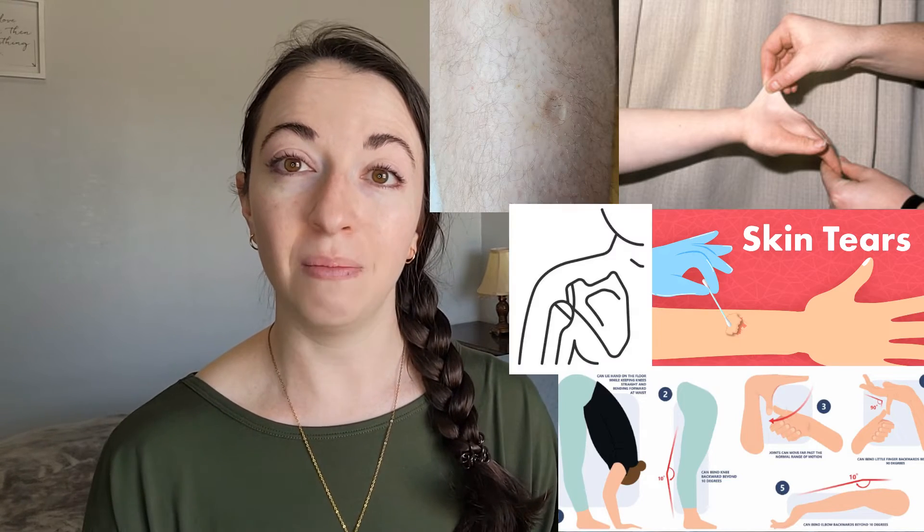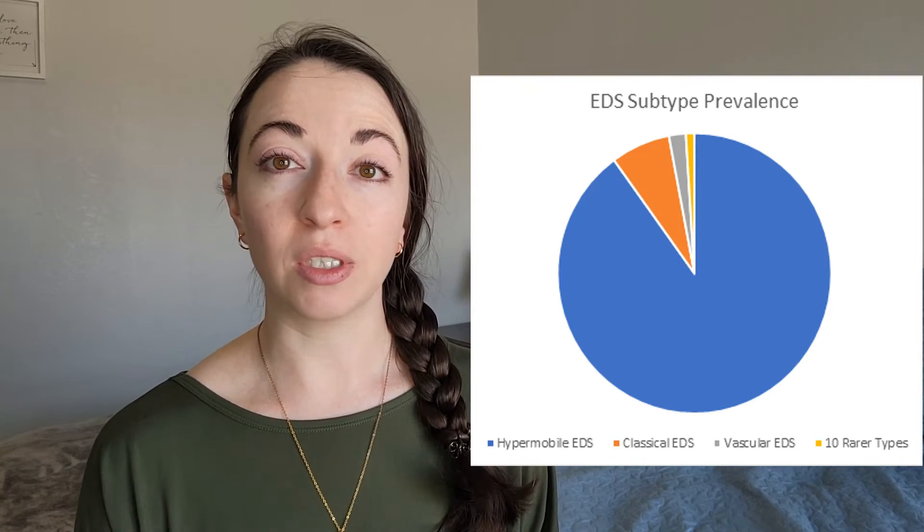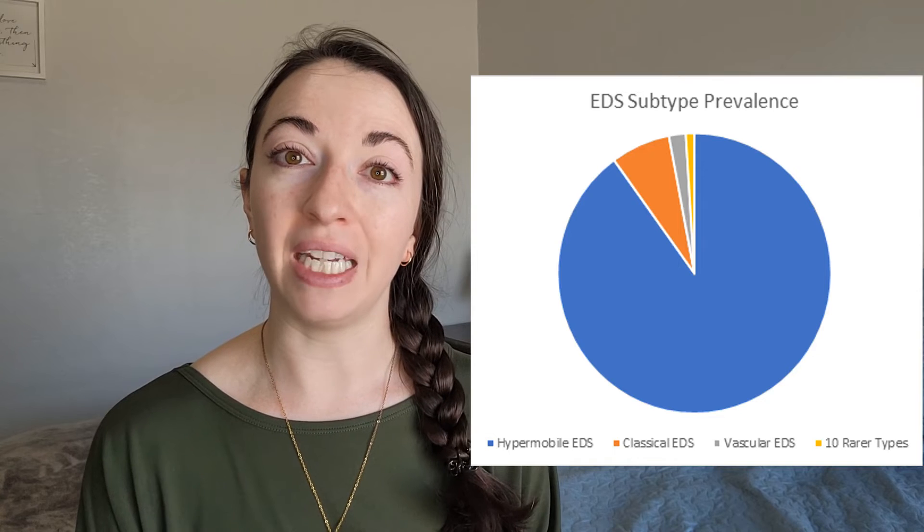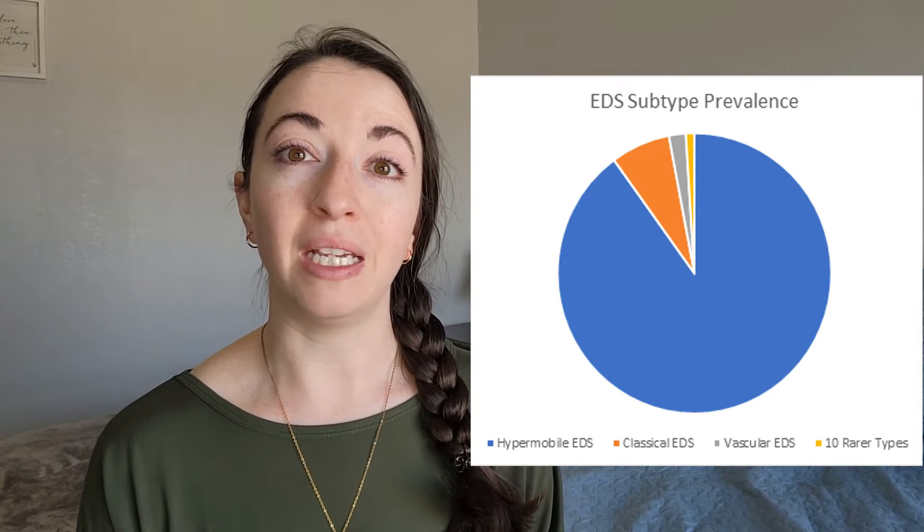joint instability. Classical EDS affects about 1 in 20,000, making it the second most common subtype of EDS, with the most common subtype being the hypermobile type. The biggest difference between classical EDS and hypermobile EDS is the severity of the skin issues present.